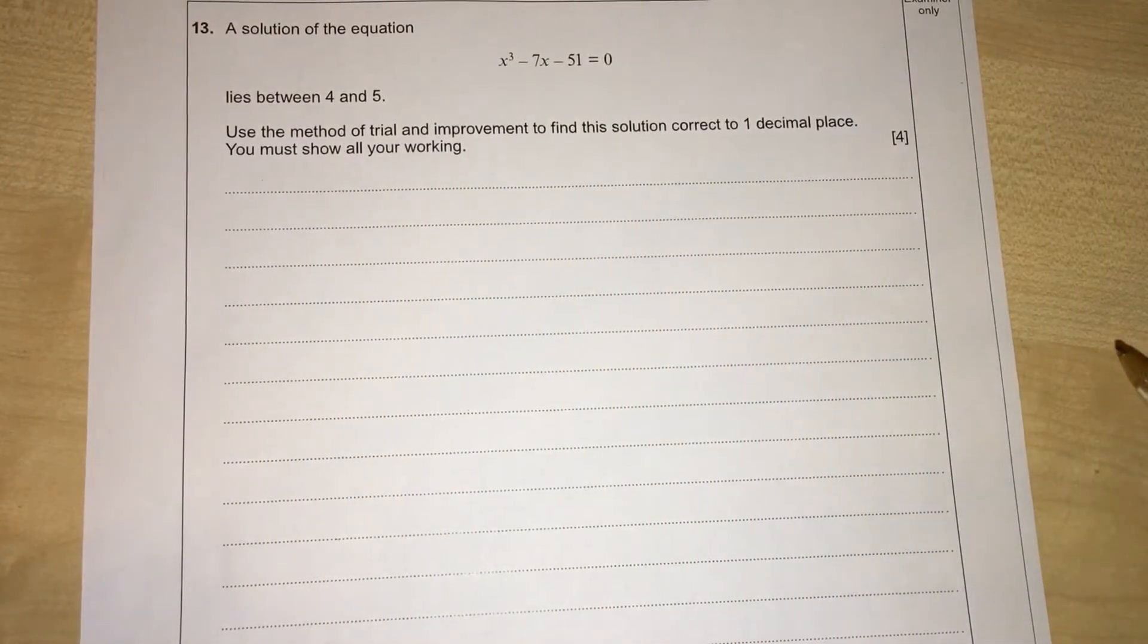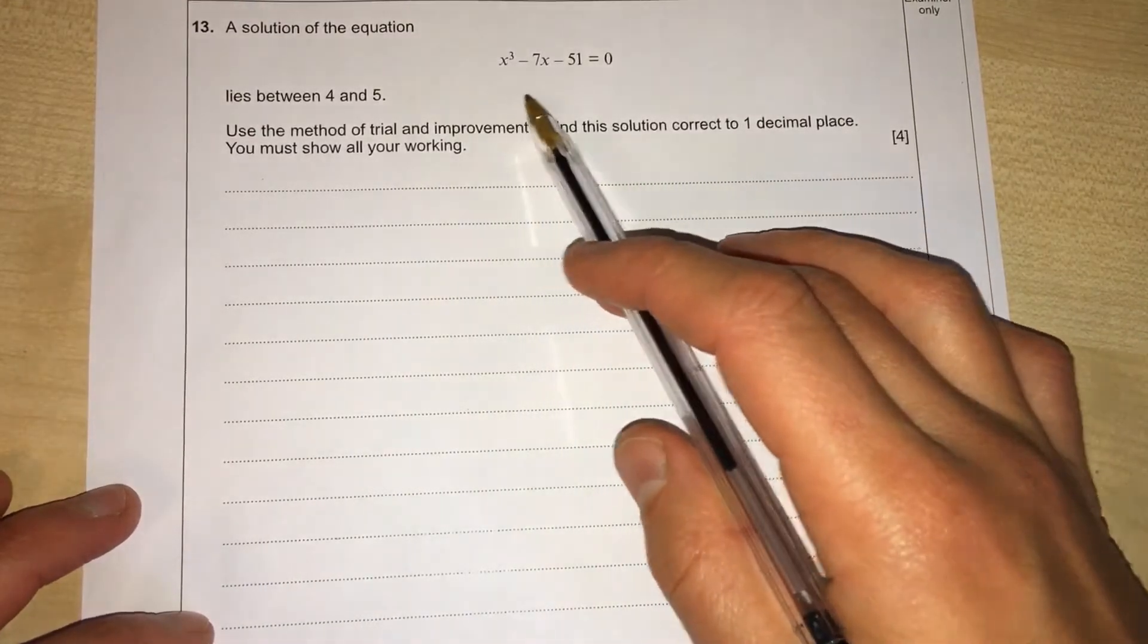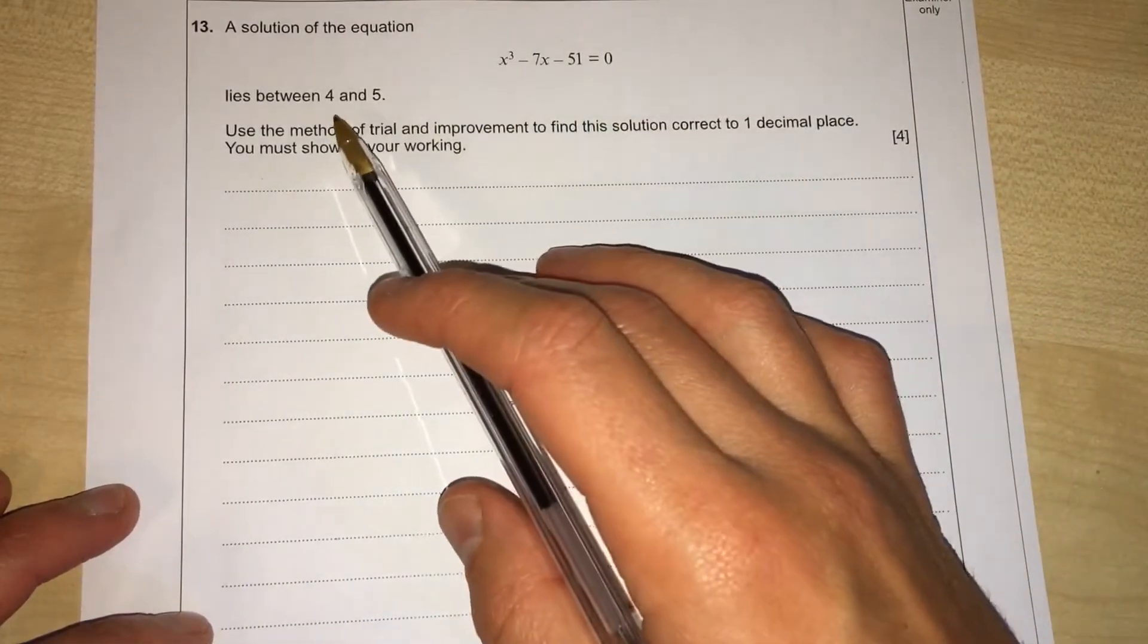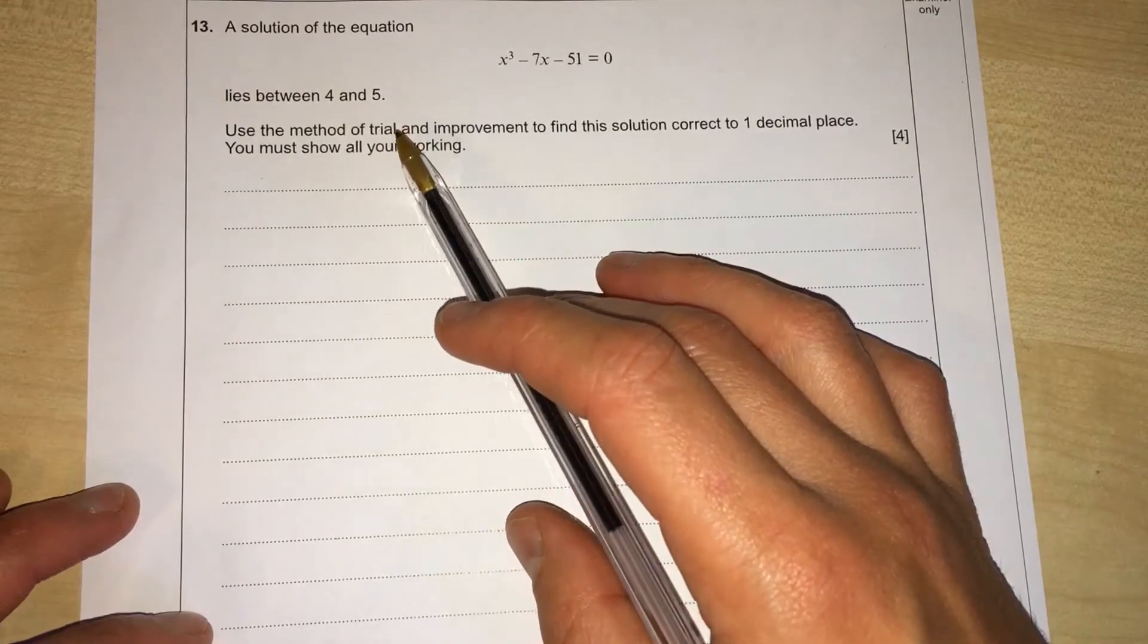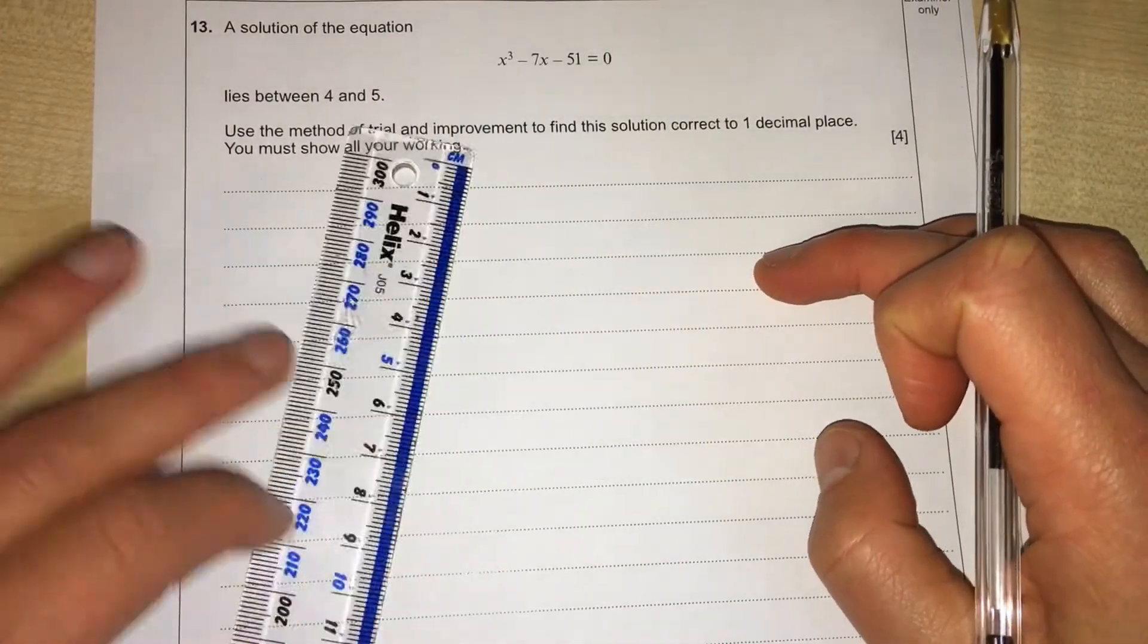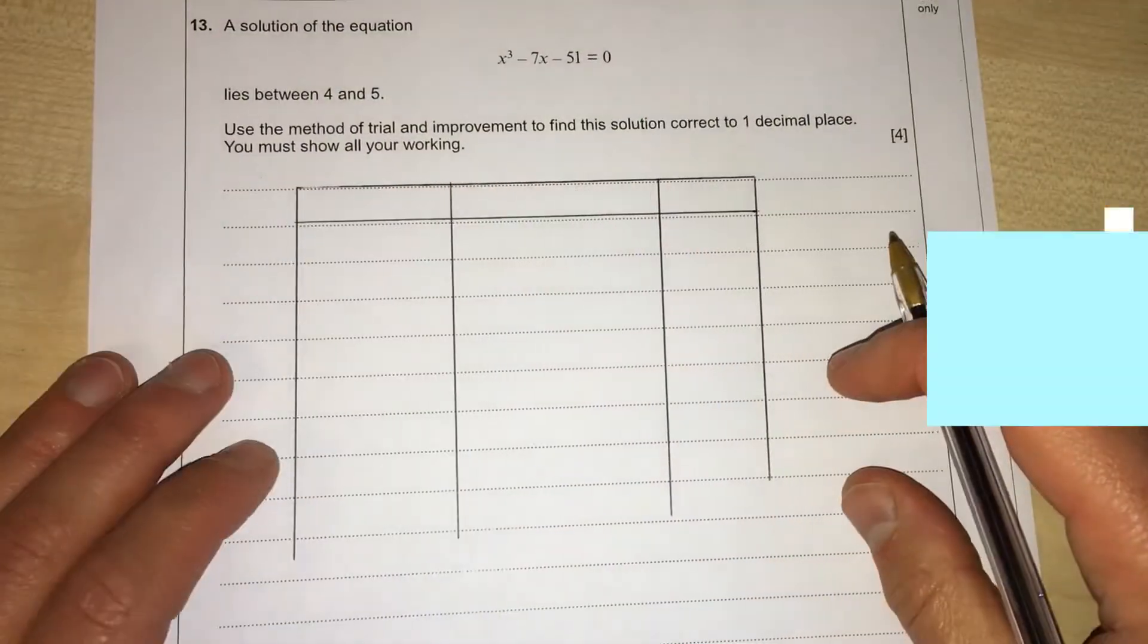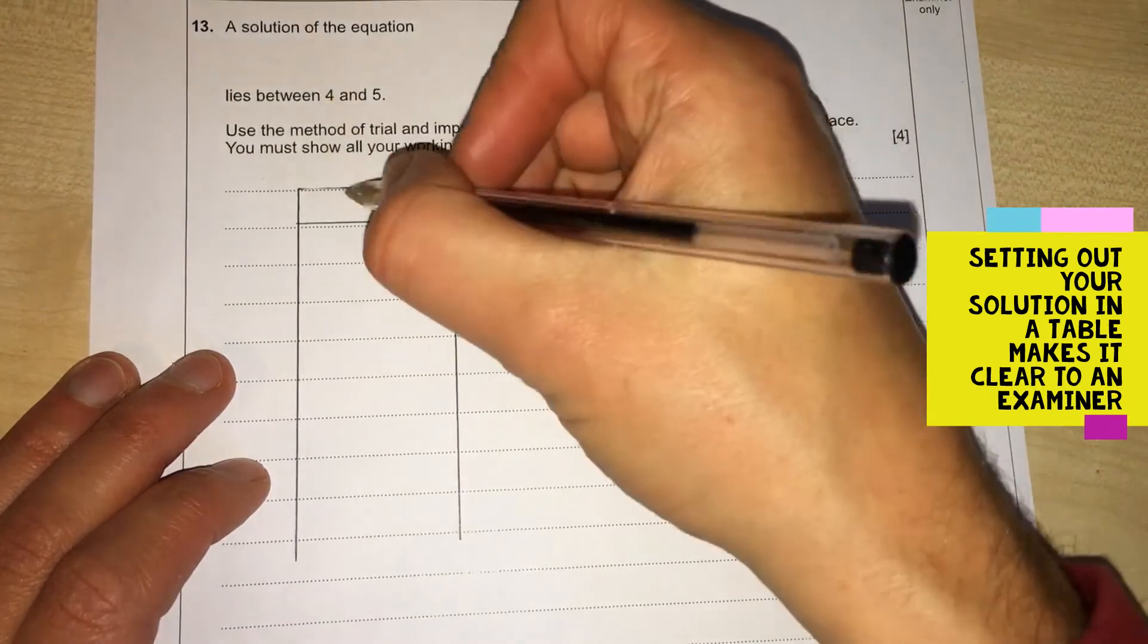Here we have an exam question all about trial and improvement. A solution to this equation lies between 4 and 5. The first thing we're going to do is draw a table with three columns. In the first column we're going to have our values of X.